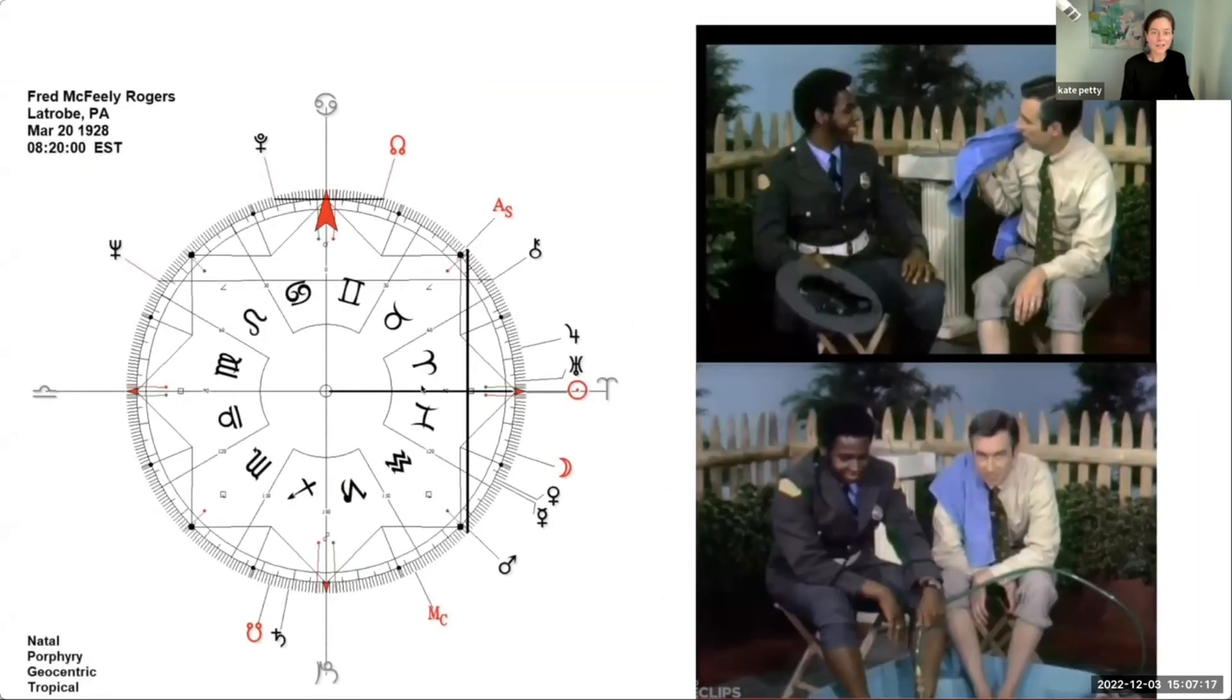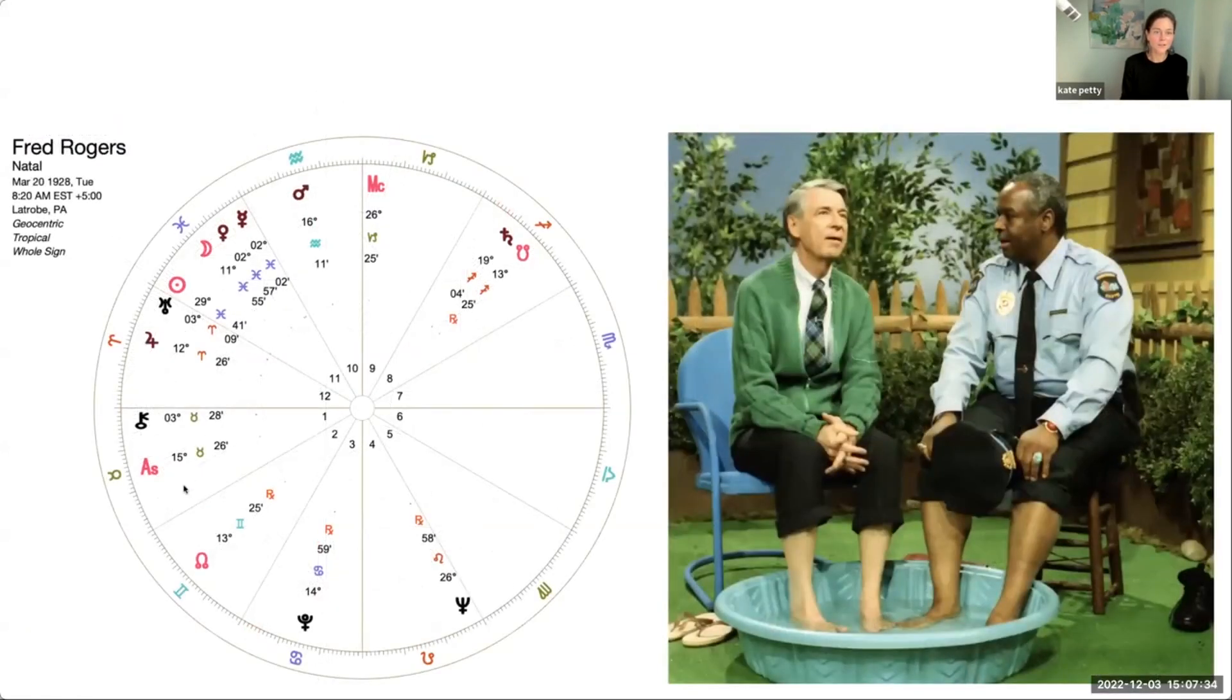I think unless we wanted to go way over and go into timing, I will conclude with Fred Rogers, Mr. Rogers, who had the ascendant in Taurus and Mars in Aquarius. And if we were to look at that chart in the regular form, you would also see that the Mars placement is in the 10th, probably by any quadrant system as well.